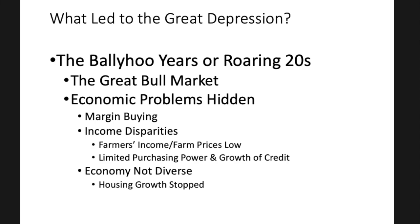The Great Depression was preceded by the Ballyhoo years, or sometimes called the Roaring Twenties. This was a time of great economic increase in the United States — the Great Bull Market of the 1920s — where the stock market was growing and growing, and there was no end in sight. But there were economic problems beneath the prosperity. A lot of people were buying stocks on margin — on credit — putting only about 10% down, hoping to pay off the rest with profits from the stocks.